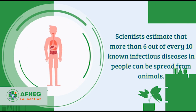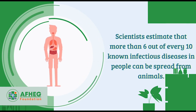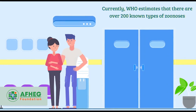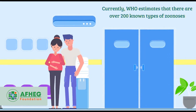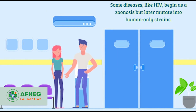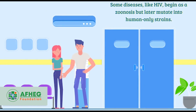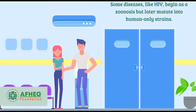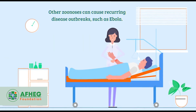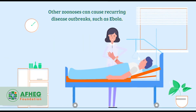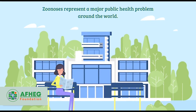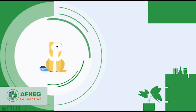Scientists estimate that more than six out of every ten known infectious diseases in people can be spread from animals. WHO estimates there are over 200 known types of zoonoses. Some diseases, like HIV, begin as a zoonosis but later mutate into human-only strains. Other zoonoses can cause recurring disease outbreaks, such as Ebola.